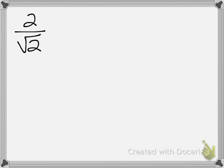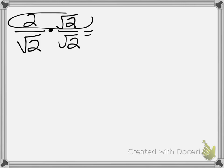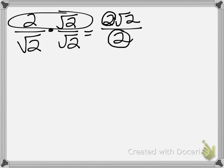Now let's look at a case where the numerator is a plain number — not a radical — but the denominator is a radical. We cannot leave that square root of 2 in the denominator, so we multiply top and bottom by the square root of 2. The top becomes 2 times the square root of 2, and the bottom becomes the square root of 4, which is simply 2. That 2 in the numerator and the 2 in the denominator cancel out, leaving just the square root of 2.